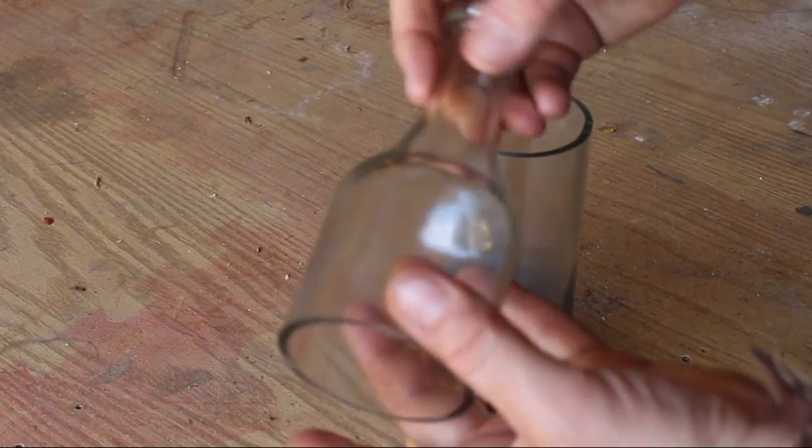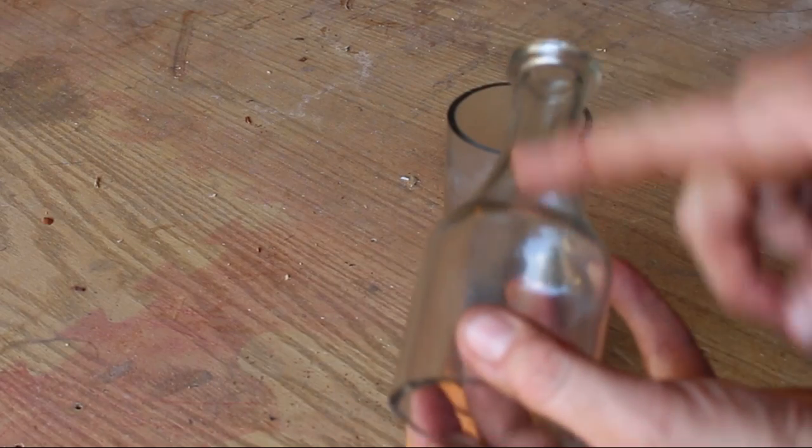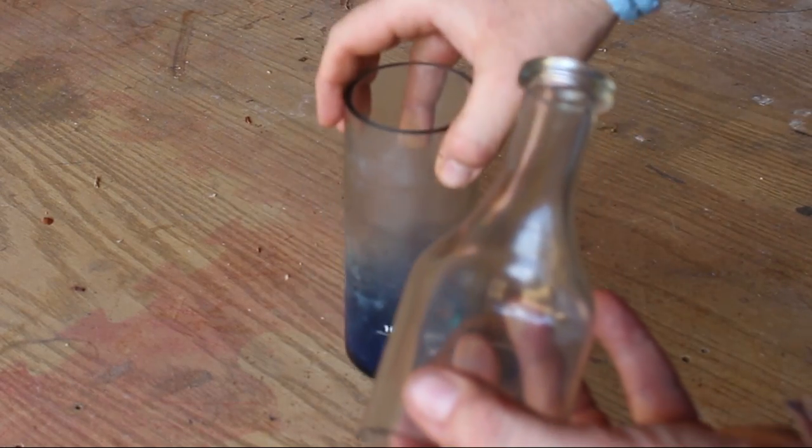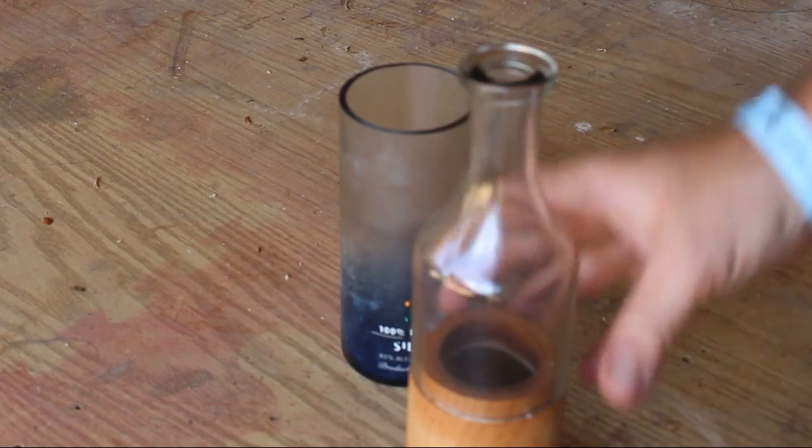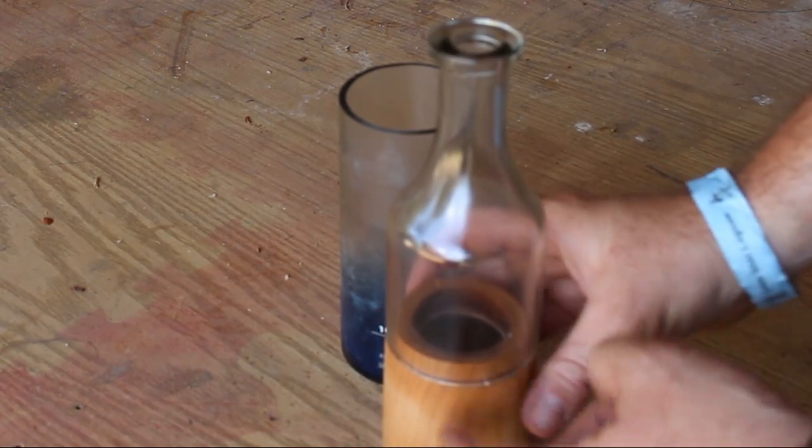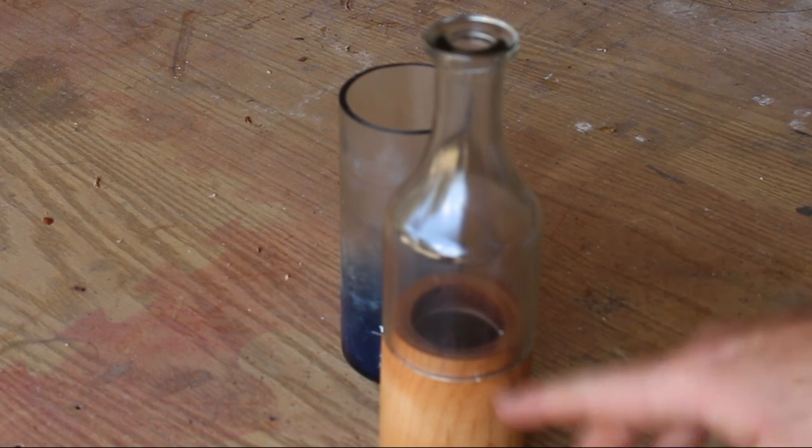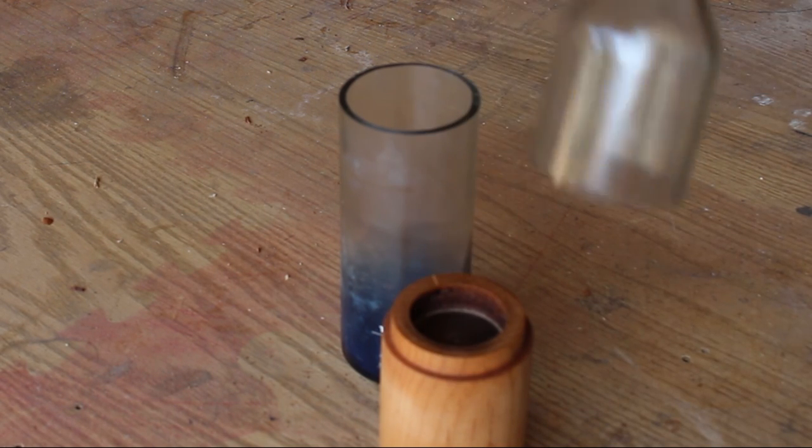So we cut this. When we took the label off, the blue that I thought was going to look really cool did not stay. So I just took it all the way off. Got it cut. Got a tea light for it. Now, all I need to do is cut this so there's some airflow. And we'll show you that.